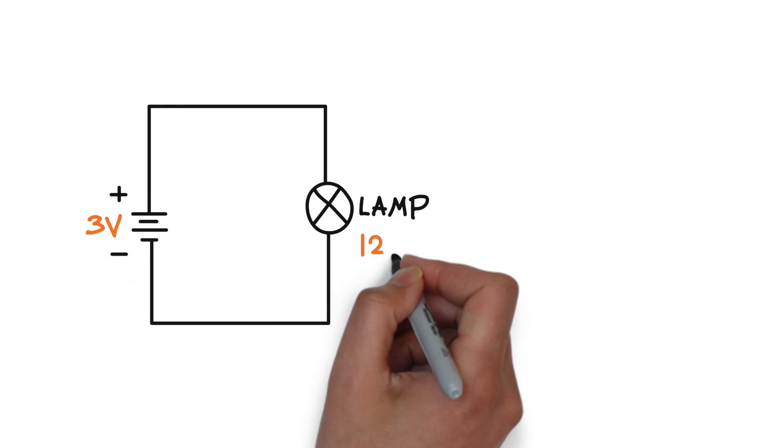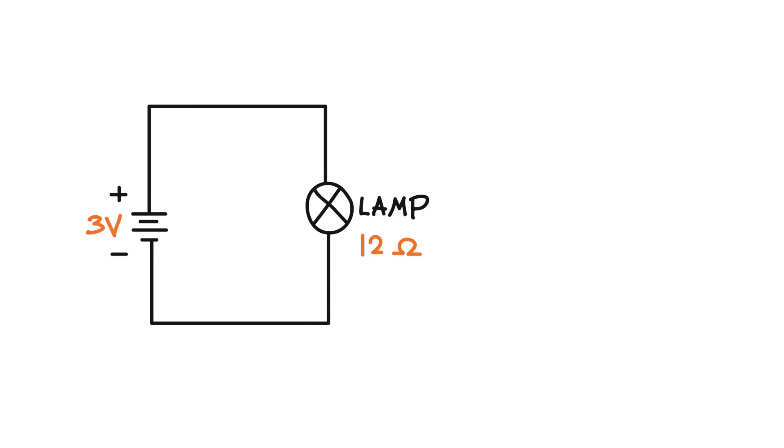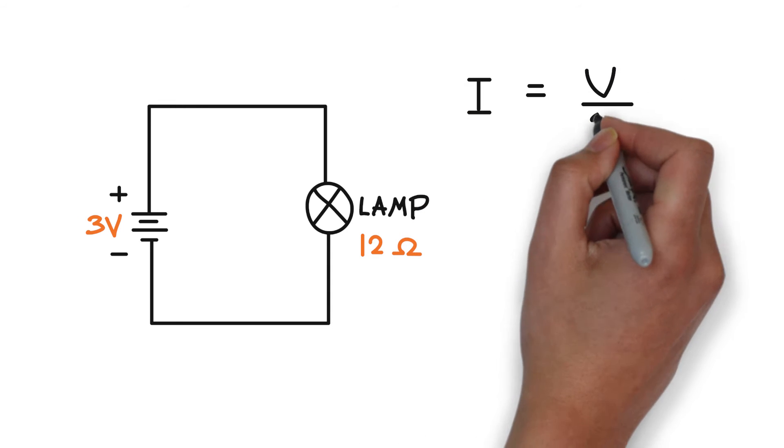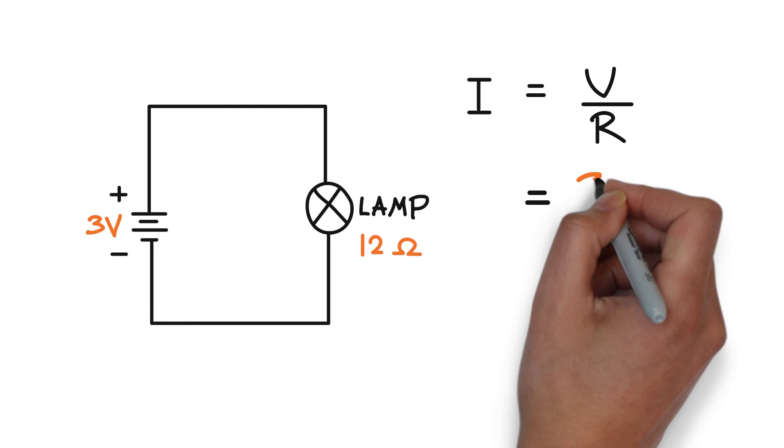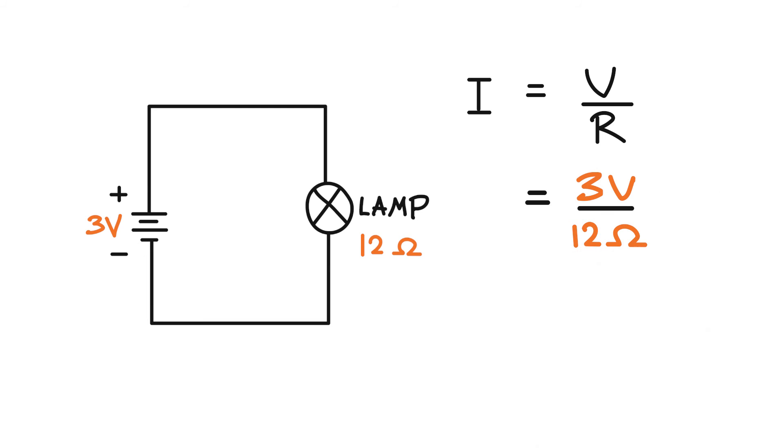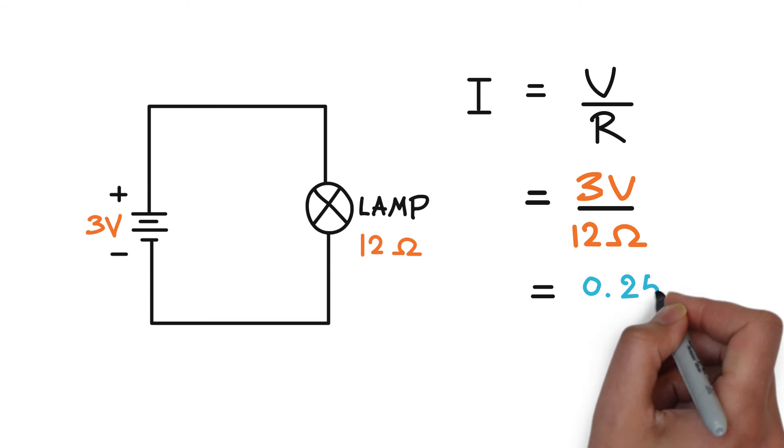Here's an example. If you have a lamp that has 12 ohms of resistance connected to two AA batteries for a total of 3 volts, then you can calculate the current flowing through the lamp as I equal to V divided by R, which is 3 volts divided by 12 ohms equal to 0.25 amp, or 250 milliamps.